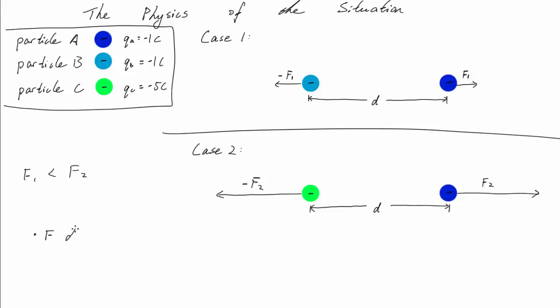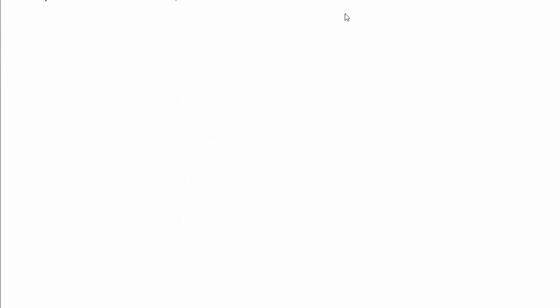So, Coulomb's law has to model force getting smaller as distance gets larger, and force getting larger as charge gets larger. Coulomb's law is given as F equals K times Q1 times Q2 divided by D squared.